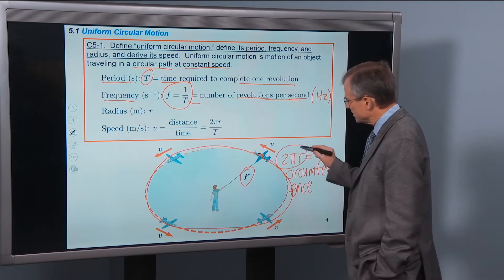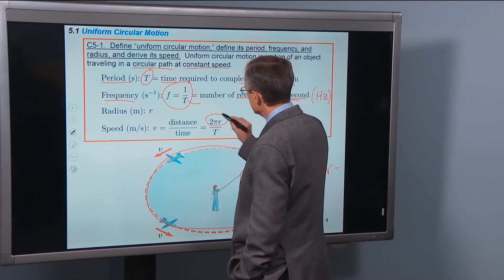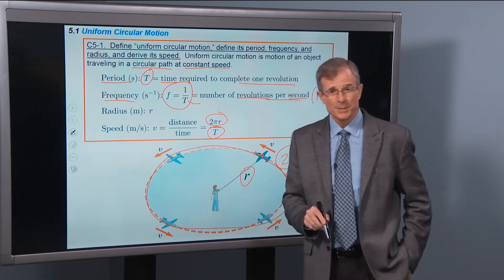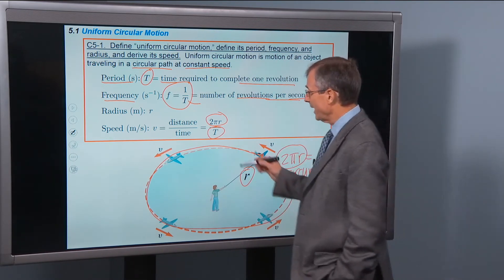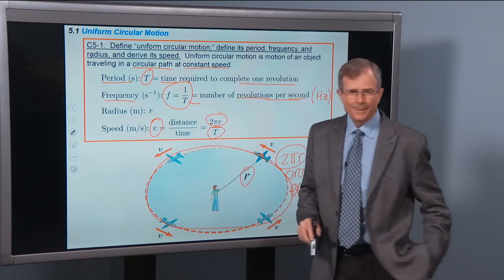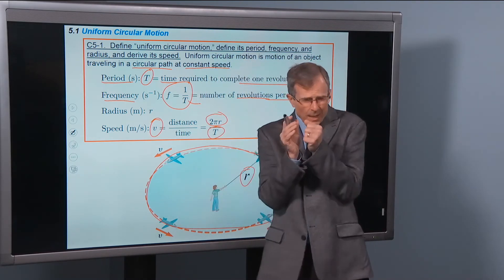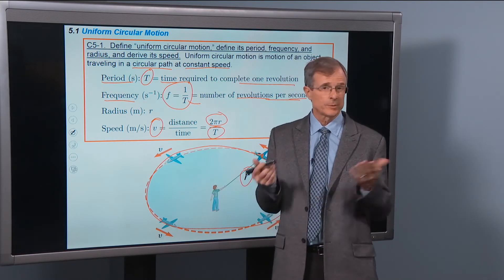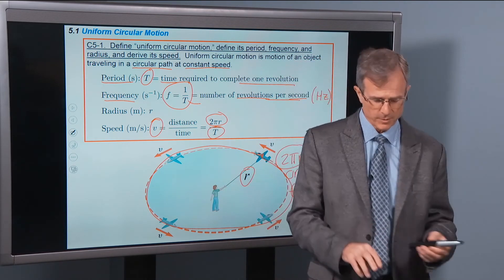And so that's the distance that it travels, so the distance that travels is 2πr. The time that it takes to travel that distance is the period T. And that gives you the speed. So anytime, if you forget how to find the speed, you just get it from this very simple argument. It's just a distance over a time, the distance is the circumference of the circle. No big deal.